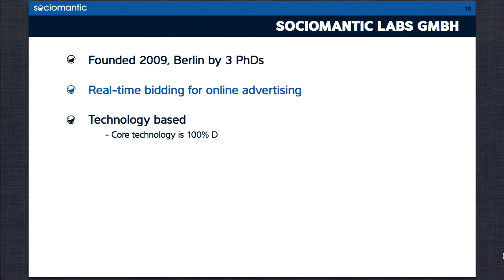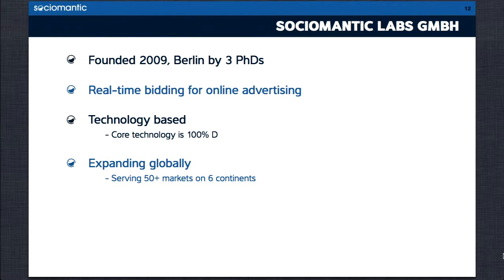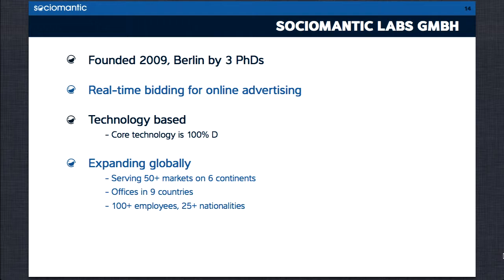Our back-end technology is 100% D. Secondly, Sociomantic is global — we are everywhere. We're now serving over 50 markets on all the non-frozen continents, with offices in nine countries. In four years, we've grown from the original three founders to a staff of about 100.